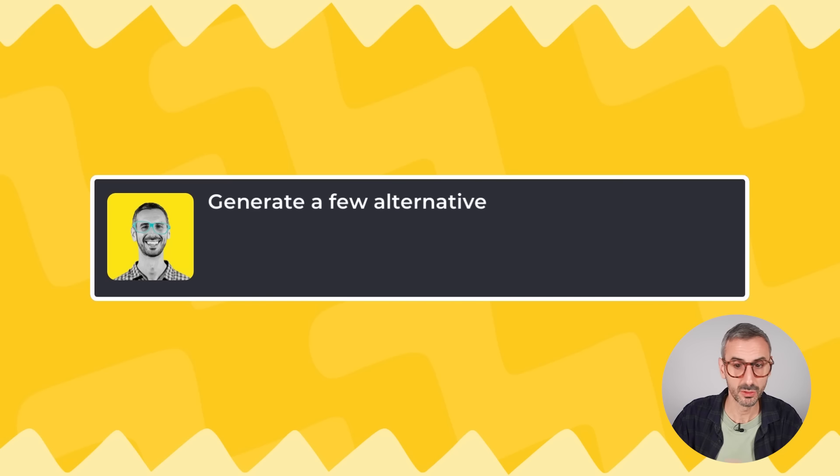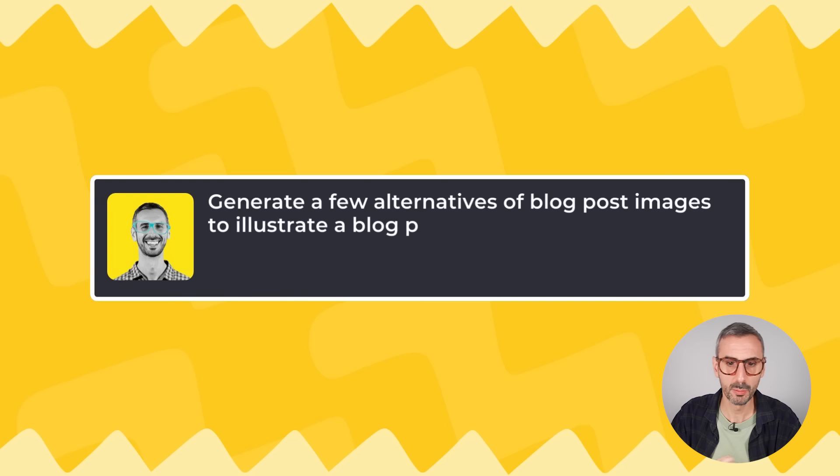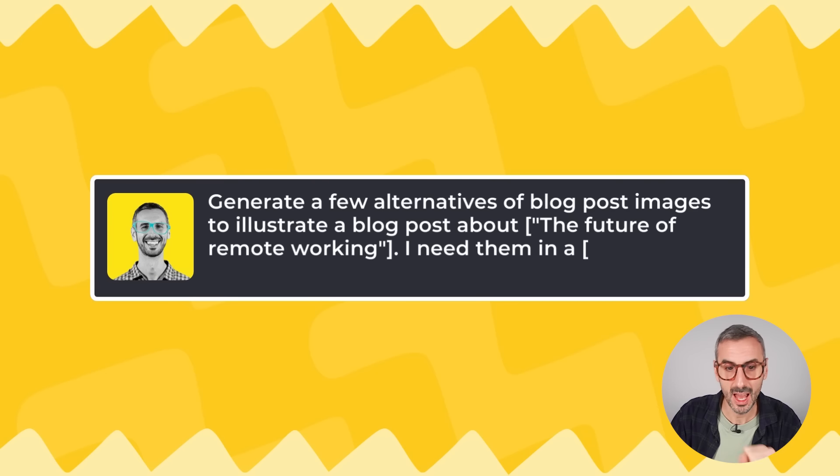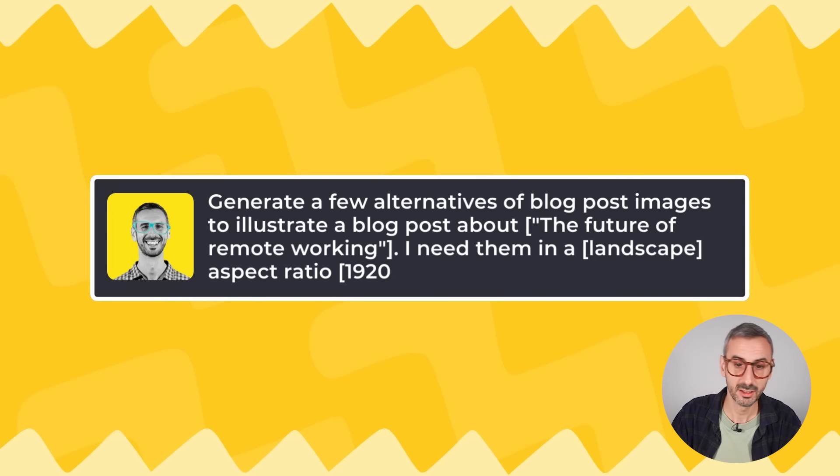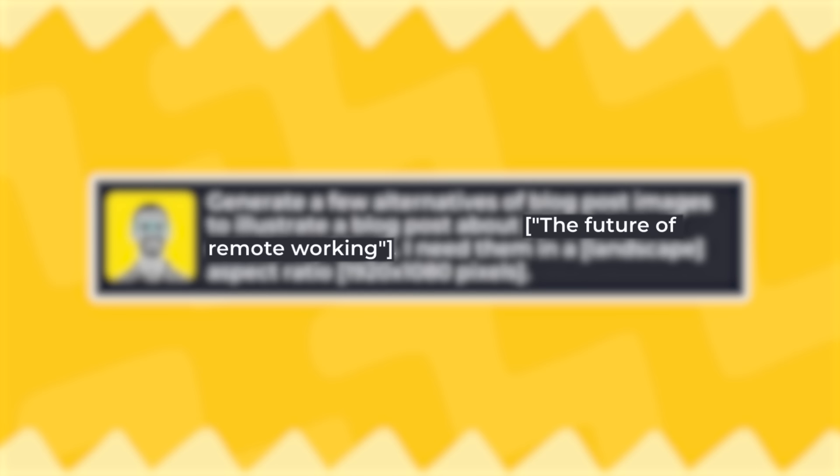You can use DALL-E in a professional setting too. For example, if you need illustrations for a blog post, you can prompt: 'Generate a few alternatives of blog post images to illustrate a blog post about the future of remote working. I need them in a landscape aspect ratio, 1920 by 1080 pixels.' There are two different variables here: the topic and the aspect ratio.